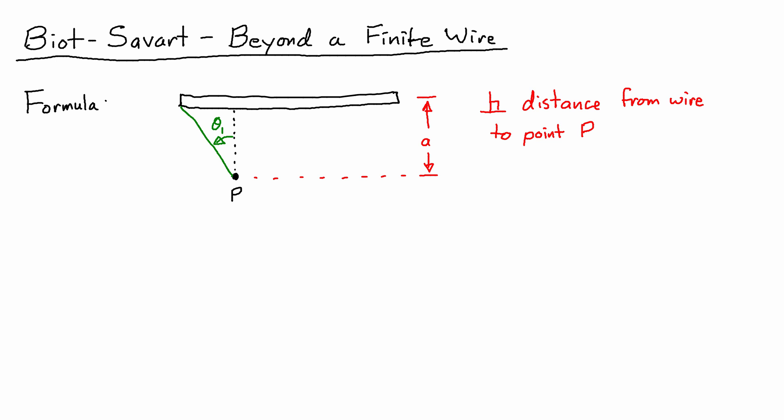The reason for that is because it's simplest to describe it in terms of angles. So theta 1 is the angle from the line that's perpendicular to the wire, but goes through P, and a line that would go from point P to one end of the wire. Then theta 2 is the angle that reaches the line going to the other end of the wire.